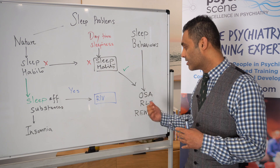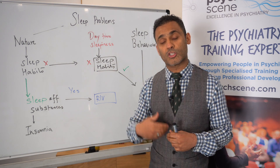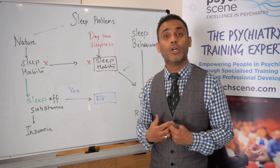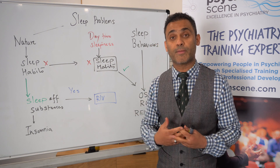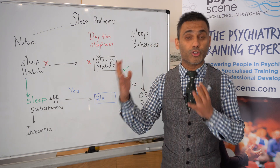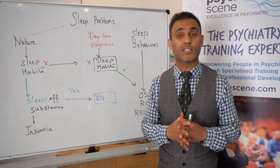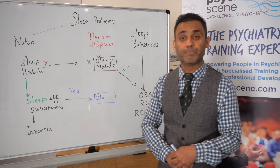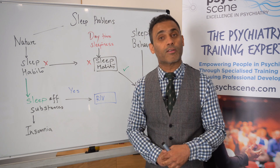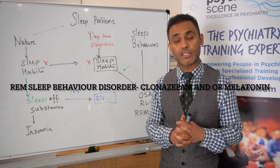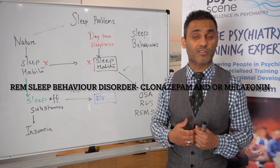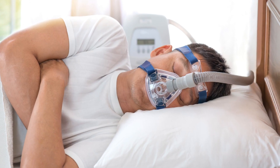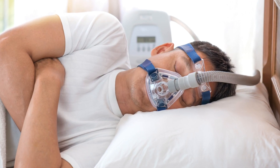For restless leg syndrome, we have dopamine agonists such as pramipexole or ropinirole, but nutritional aspects need to be looked at as well. For REM sleep movement disorder, there are other agents that can be considered. For obstructive sleep apnea, treatments such as CPAP can be beneficial.